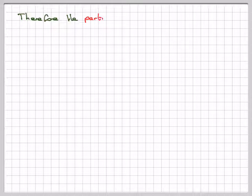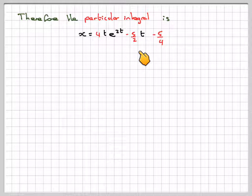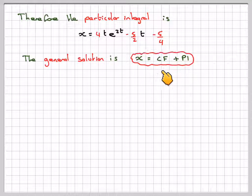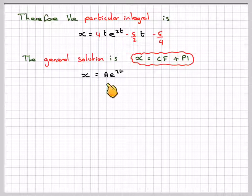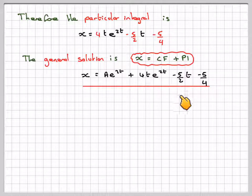So the particular integral is going to be x is equal to 4te to the 2t minus 5 over 2t minus 5 over 4. And then the general solution is the complementary function plus the particular integral, which is x is equal to ae to the 2t plus 4te to the 2t minus 5 over 2t minus 5 over 4.